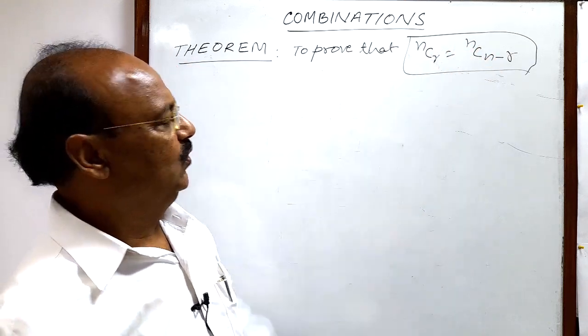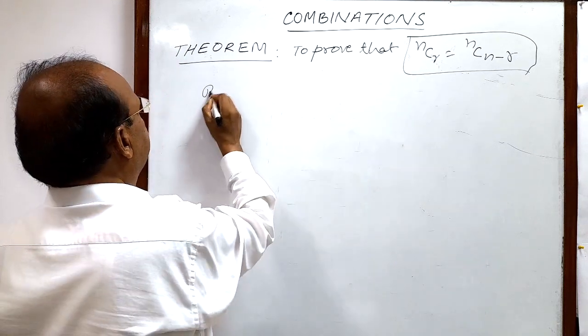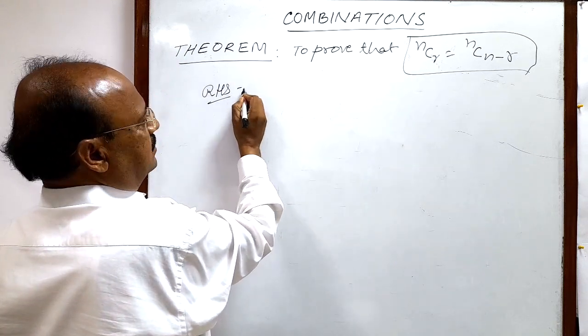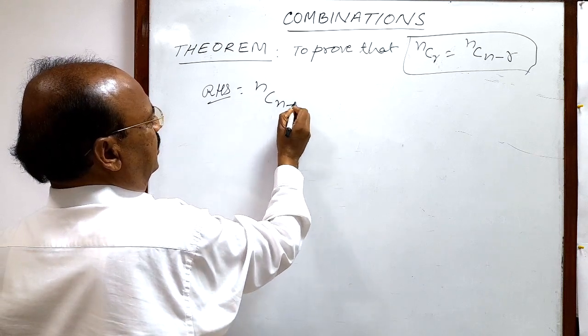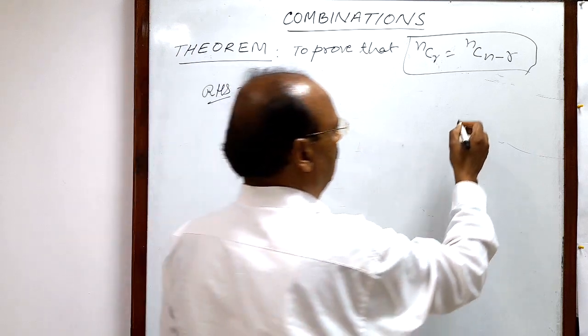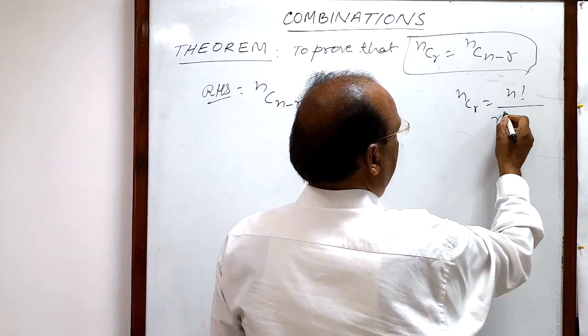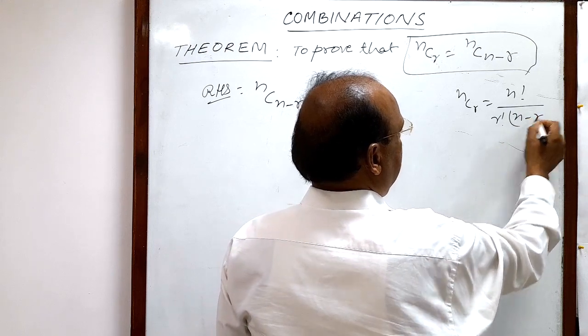So let us prove this. It will be easier to start with the right hand side. So here right hand side is nC(n minus r), and we know the formula that nCr is equal to n factorial by r factorial (n minus r) factorial.